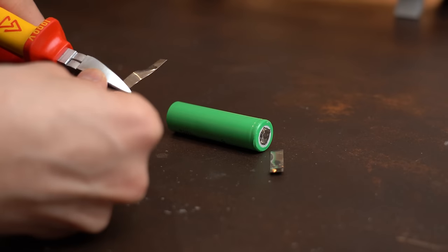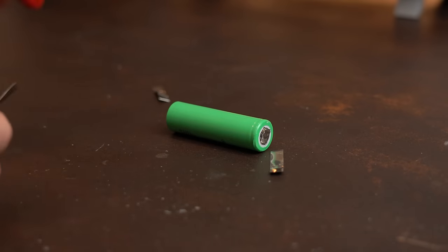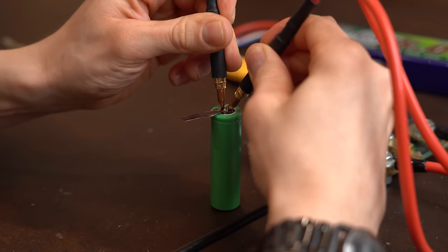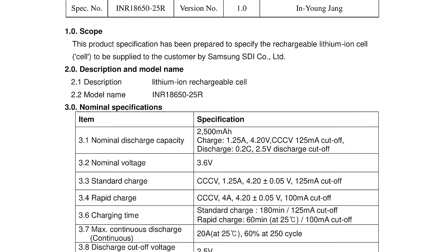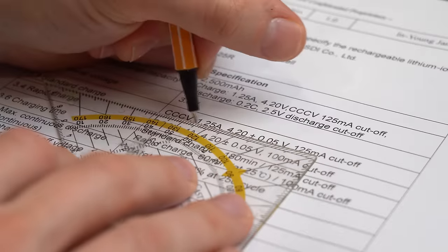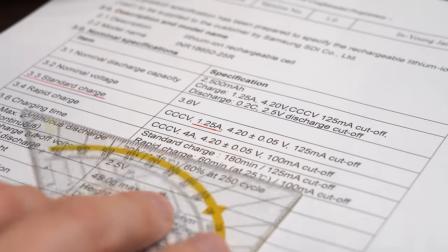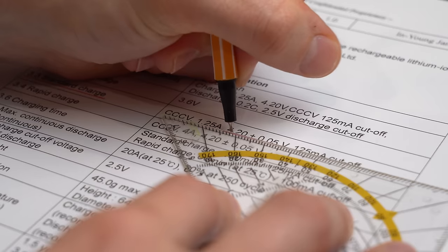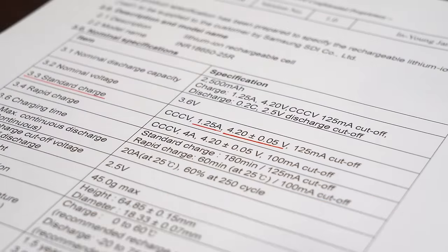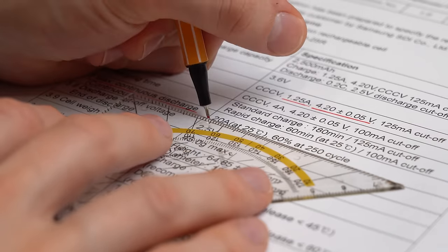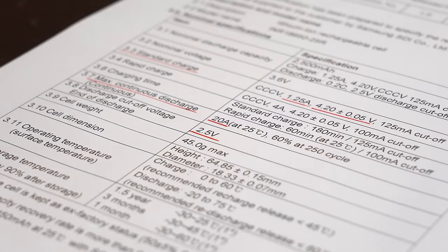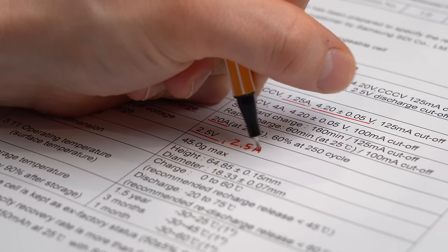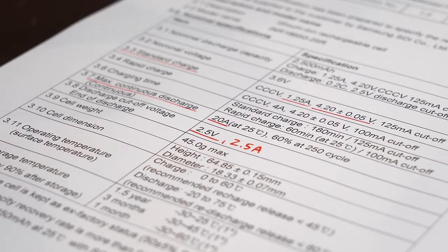So let's do just that, starting with the lithium battery by firstly adding tabs to its plus and minus pole and then checking its datasheet to find out how it wants to get treated. And it seems like its standard charge is 1.25A up to a voltage of 4.2V and for the discharge we can do a maximum of 20A down to 2.5V, but I wanted to keep it low and thus settled for 2.5A.